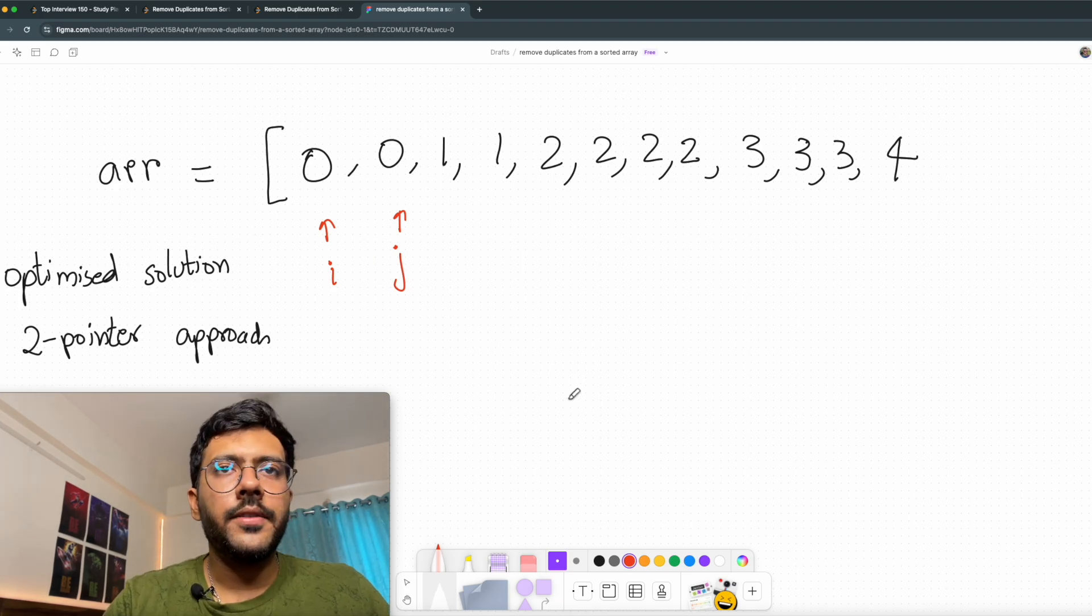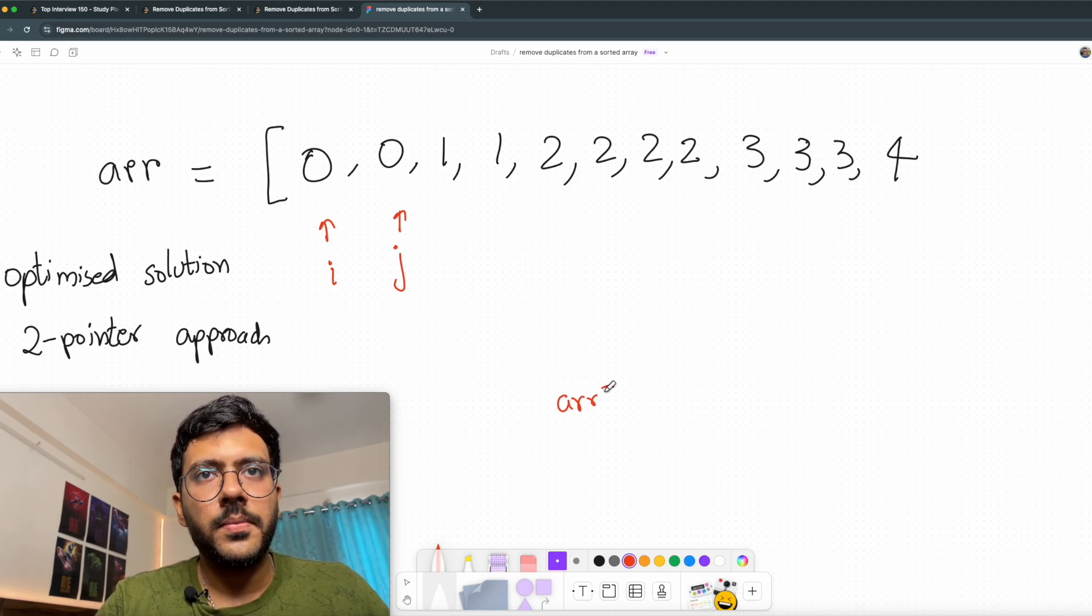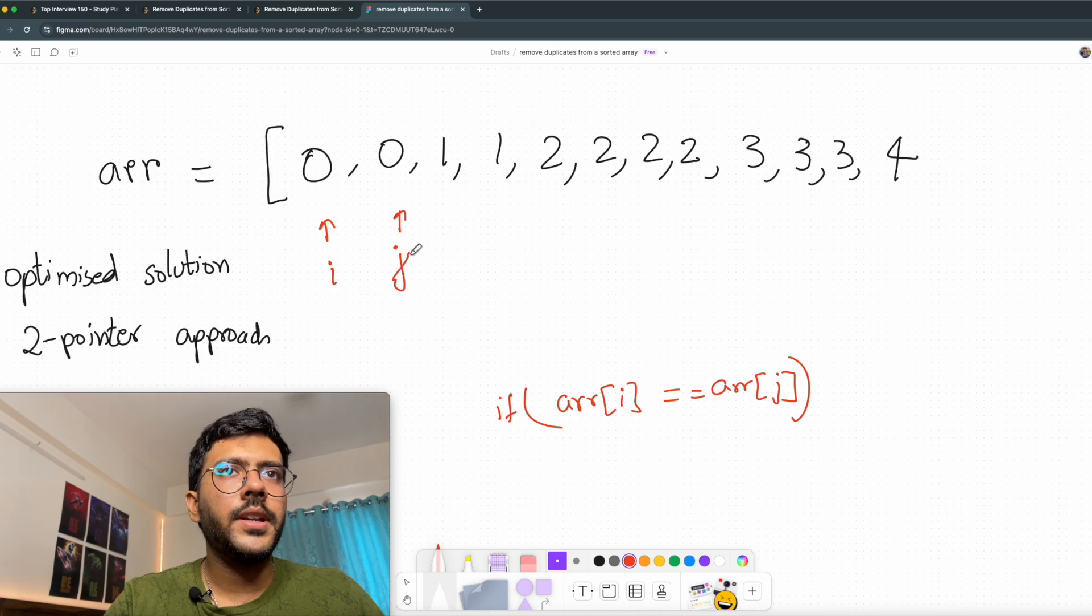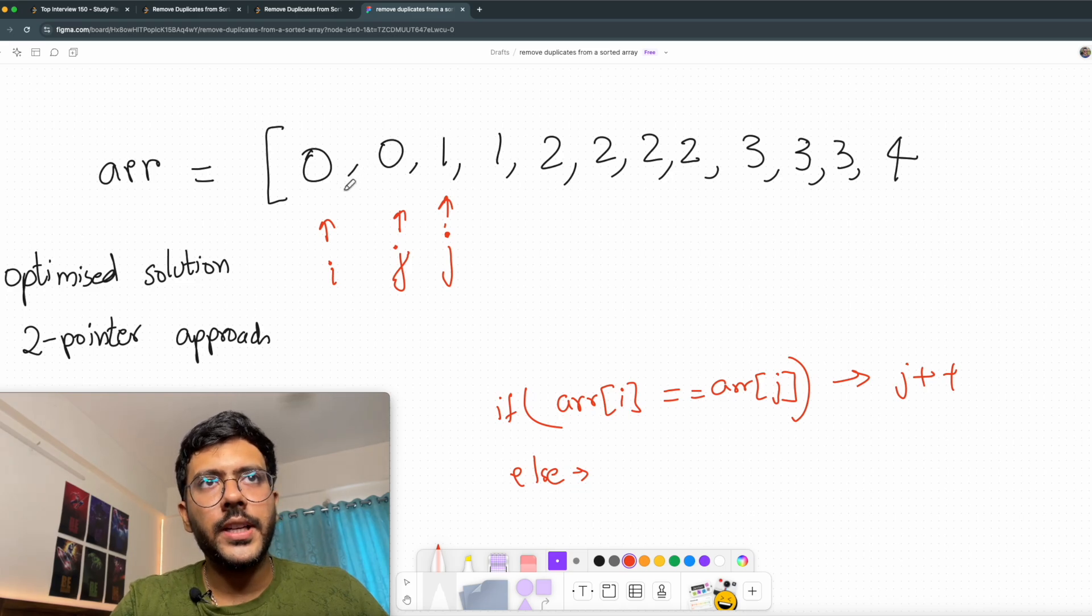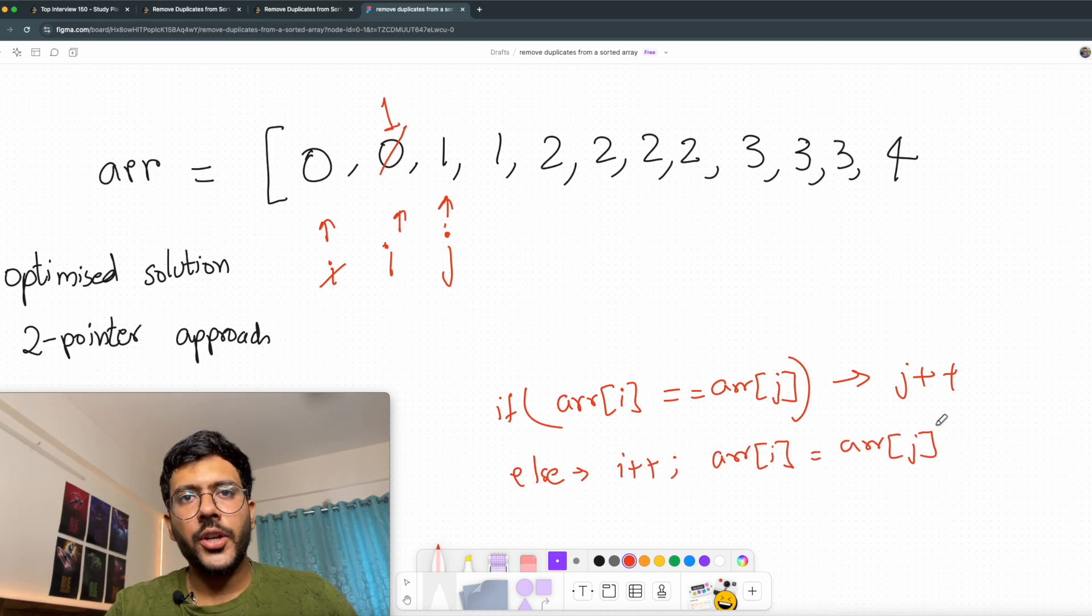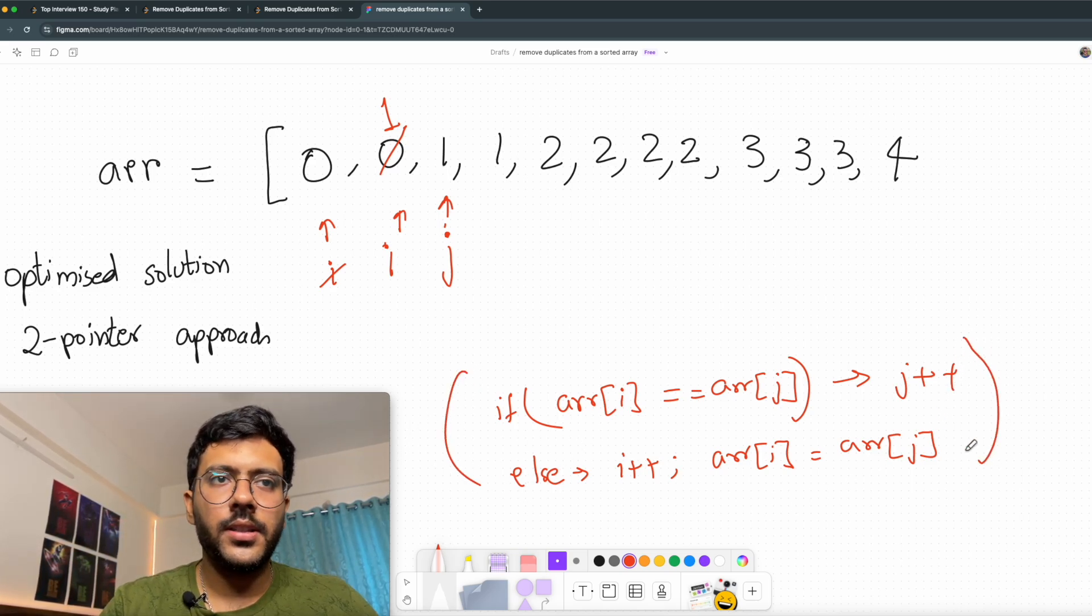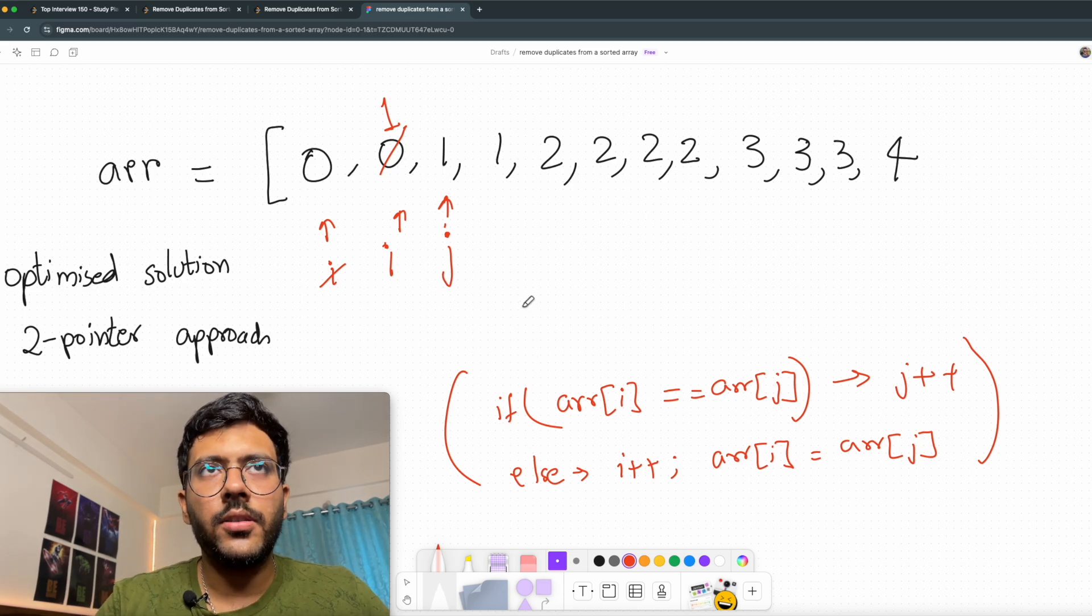So my logic will be if the value at position i is equal to value at position j, I will increment my j. So for this case, since j and i both have 0, I will remove j from here and I will increment it to this location. Now I see that j has a different value than i. In that case, I want to store this new element after my previous i. So for that I will increment this i and I will store this new value in the position of new i. Now this is going to be my entire logic and I will iterate the entire array based on this logic. Let's do a dry run of this approach and see how it plays out.